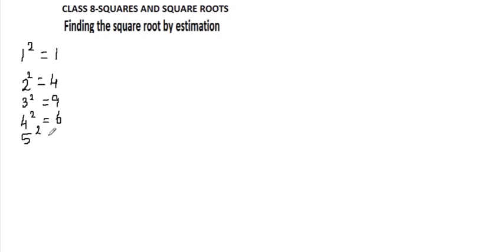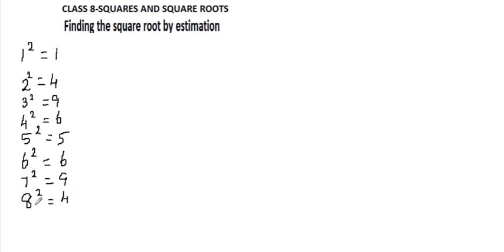5 square will always end with 5. Then 6 square — let it be 6, 16, 36, 46 — anything, 6 square is going to always end with 6 only, like 36. Then 7 square is going to end with 9 again. Then 8 square is going to end with 4 — that is 64. Let it be 8 square, 18 square, 28 square, 38 square — any number is going to end with 4. Then 9 square is always going to end with 1, that is 81, and 19 square, 29 square, 39 square — same manner.